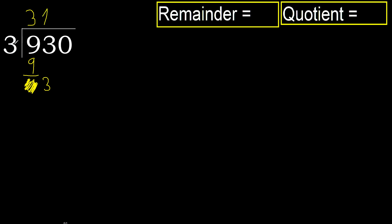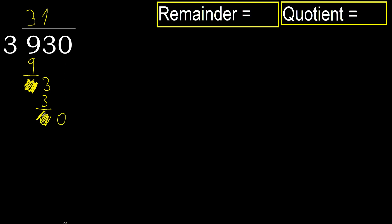3 multiplied by 1 — 3 is not greater. Ok, subtract. Next, eliminate 0 on this side.